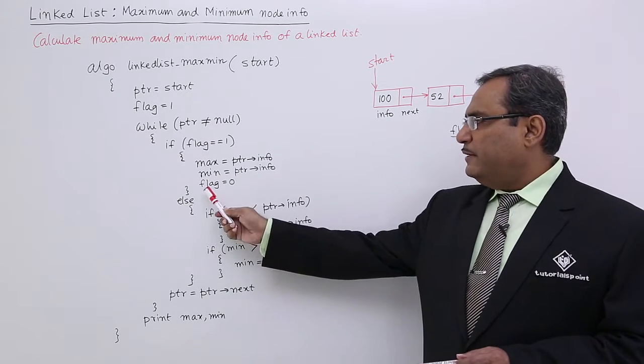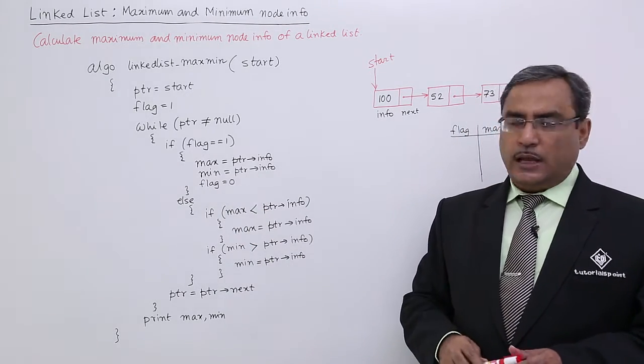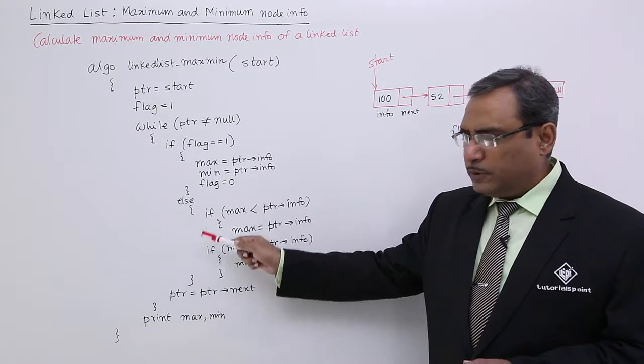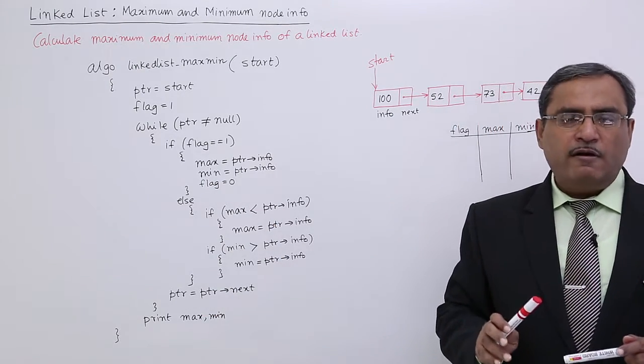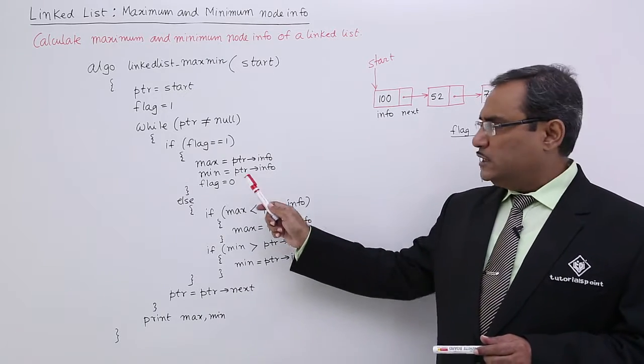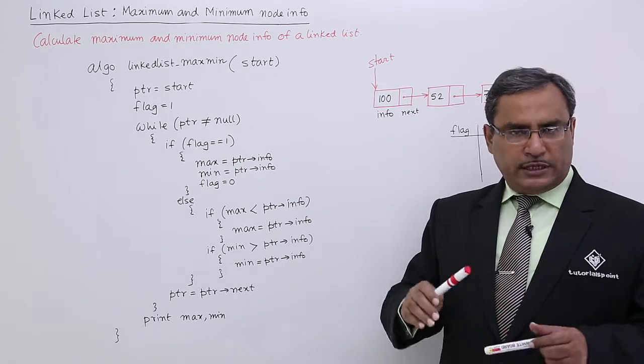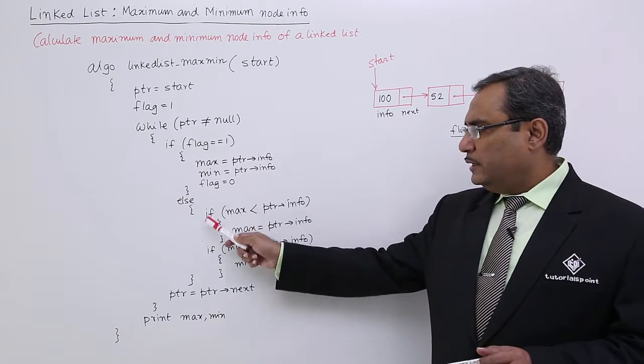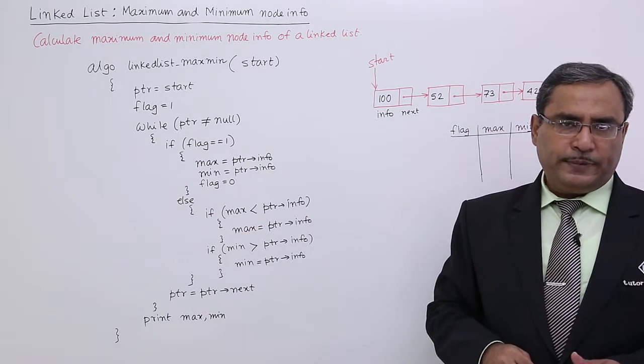I have made flag equal to 0, and throughout the rest of the program I never made flag equal to 1. So for the first time only this part will get executed; in the rest times only the else part will get executed. That means the first node's info will be the maximum as well as the minimum.